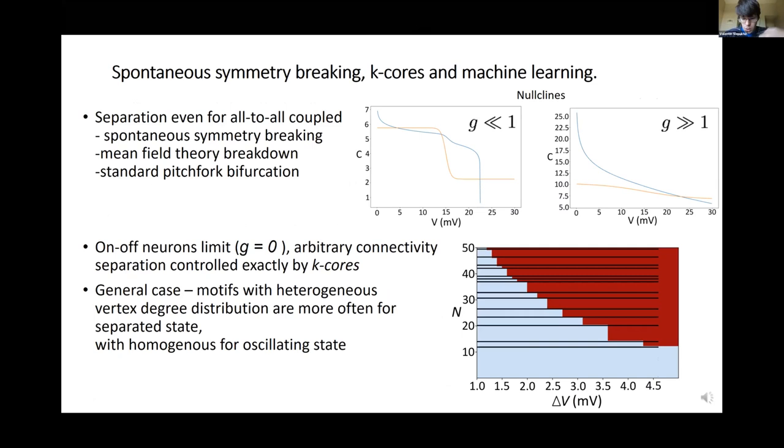First, we explore the all-to-all coupled network, which is the simplest version of the model. For all-to-all coupled network, we see that this separation still occurs, which means that it is a spontaneous symmetry breaking. There was a symmetry in all-to-all coupled, but still it separates into different firing parts. This separation occurs as a standard pitchfork bifurcation as we change the slope of the sigmoids.